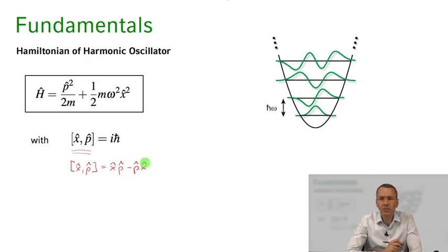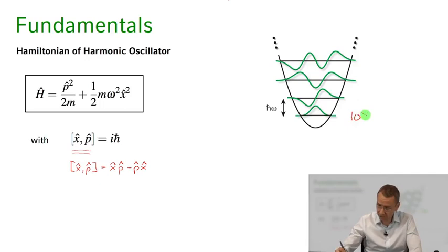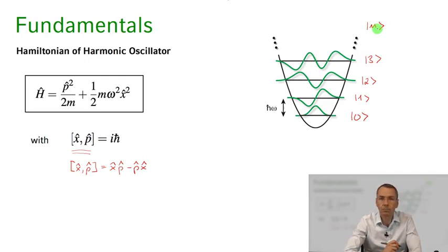Now you all know the eigenstates of this harmonic oscillator. I've sketched them here for you. Here's the Gaussian ground state wave function, here's the first excited state, second excited state, third excited state and so forth. So let's label these as state zero, the ground state, state one, first excited state, second excited state, third excited state, and the nth excited state of my harmonic oscillator.